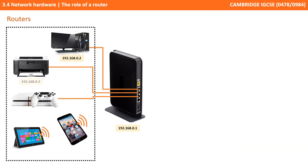Here we see an example of a router connected to a home network. You'll notice that the router is able to assign IP addresses to all devices on the local network. You can tell all these devices are on the same network as the first part of the IP address is the same for all devices: 192.168.0. The router assigns itself the IP address ending in 1, and then assigns the other devices IP addresses as they come online and request connection.